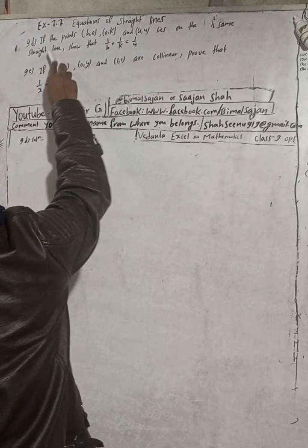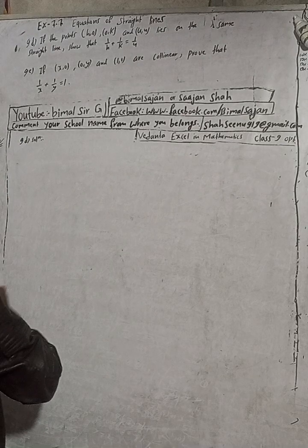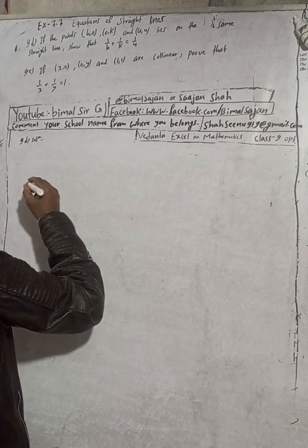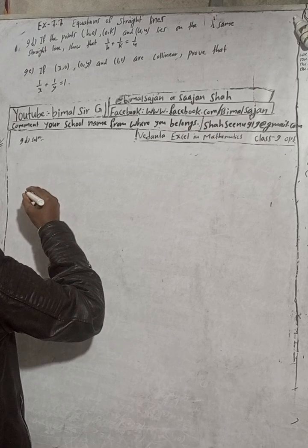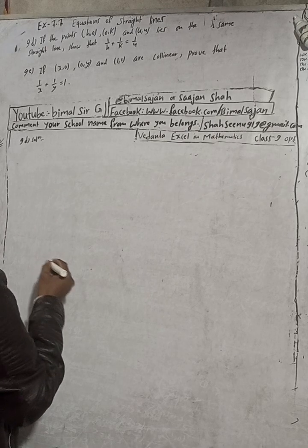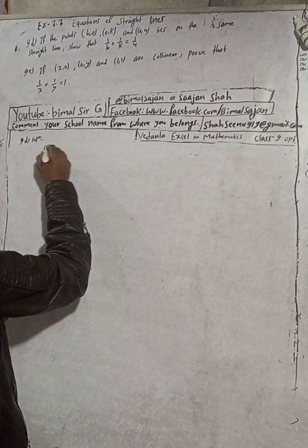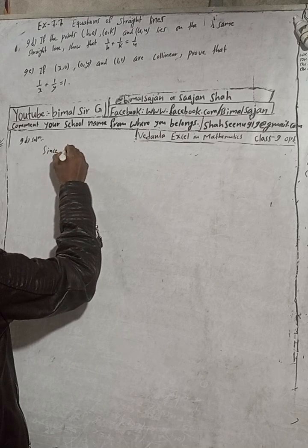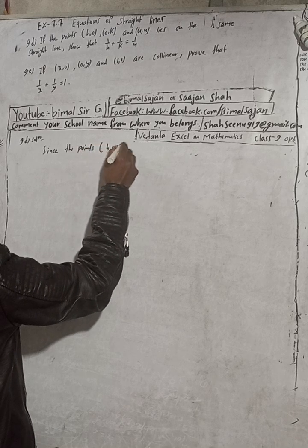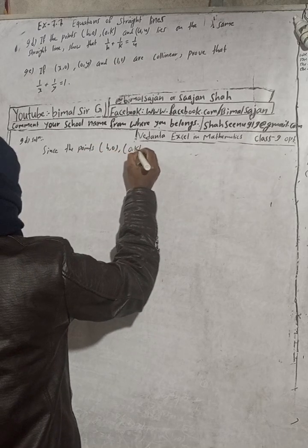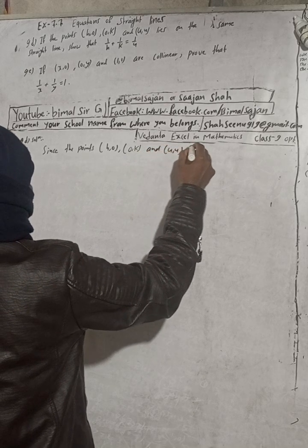Since the points h comma 0, 0 comma k, and 4 comma 4 lie on the same straight line, they are collinear. When three points are collinear, the area of the triangle formed by them is equal to zero.